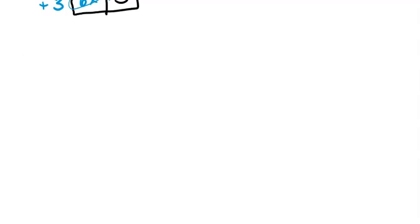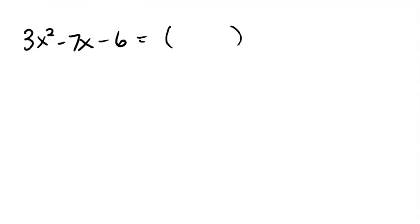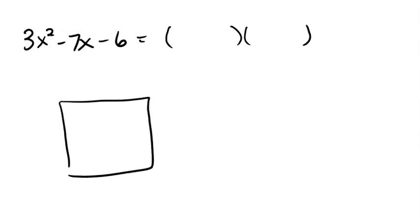Let's say we have 3x squared minus 7x minus 6. So I know I'm looking for what are the binomials that multiply to give me this. I'll start with my box. I have my 3x squared and my minus 6.